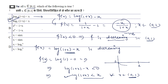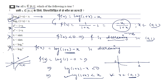Similarly, options B and C can be disproved using the same argument (those functions would be increasing). Option D is clearly incorrect since log x is negative and x is positive on (0,1). So option A is the correct answer.